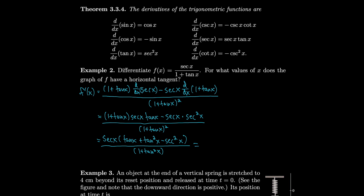Now we use the identity 1 plus tangent squared equals secant squared, so we can replace secant squared with 1 plus tangent squared. That gives tangent squared minus 1 minus tangent squared in the bracket, so the tangent squared terms cancel and we just have a minus 1 inside. We end up with secant x times (tangent x minus 1), over (1 plus tangent x) squared.